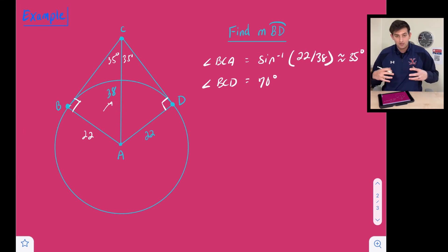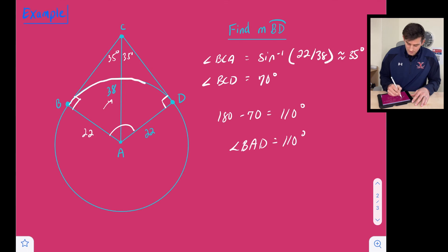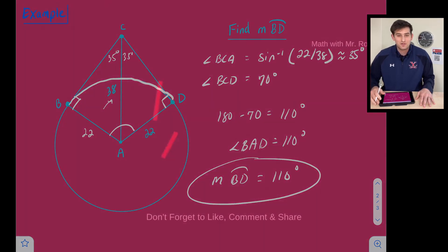So now we know that would be our circumscribed angle. So to find our central angle, we would do 180 minus 70, and that's going to give us 110. So that means our central angle here, angle BAD is equal to 110 degrees. Well, since that's a central angle, our arc BD has the same measure as the central angle. So we could finish this off by saying the measure of arc BD is also equal to 110 degrees. And that is circumscribed angles.